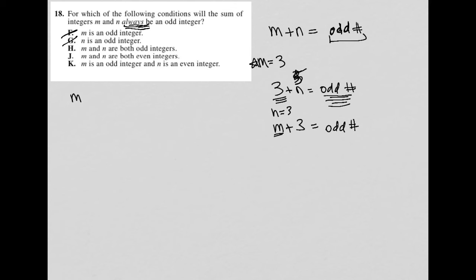So choice H says m and n are both odd integers. All right. Well, let's see. So if m equals 3, I said n equals 3, well, that would make that equal to 6. So there's an example where that doesn't work. So H is crossed out.